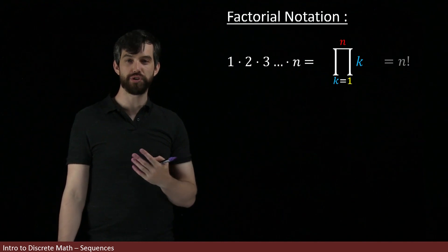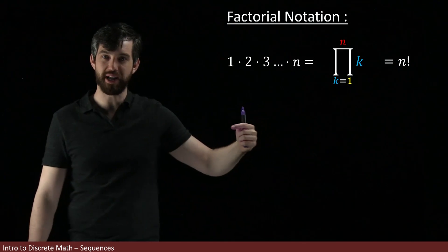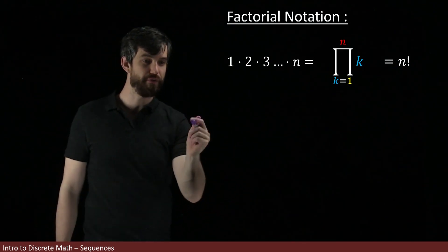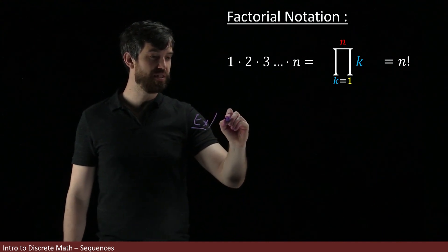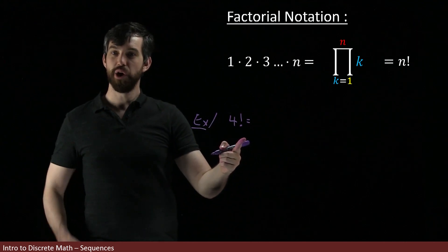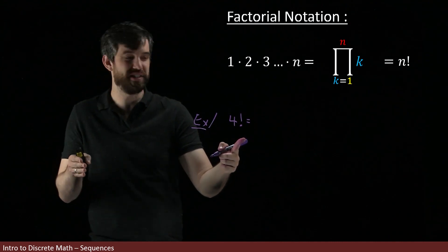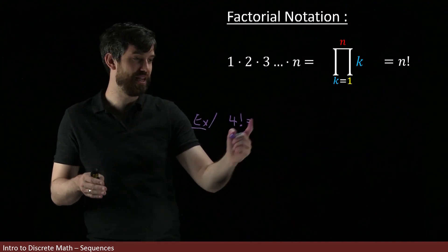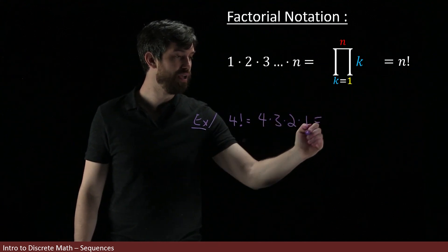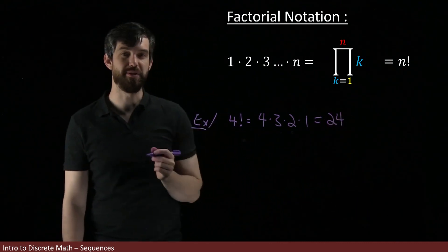And, the other notation for it, our shorthand for it, is going to be an n. And, then I put a little exclamation mark. And, the exclamation mark means this particular product. So, for example, if I wanted to compute, say, 4 factorial, I'm going to say that this is 1 times 2 times 3 times 4. Or, if I want to do it the other way around, which, for some reason, seems to be how it's most often represented, 4 times 3 times 2 times 1, which is 6 times 4. So, 24. And, that is going to be 4 factorial.